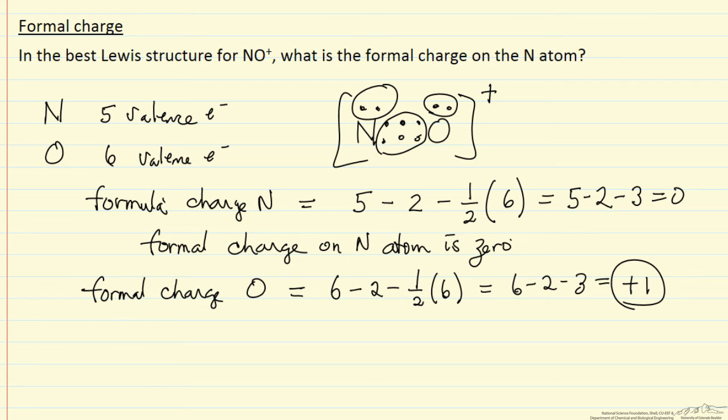This then is consistent because the sum of the formal charges has to equal the charge on the molecule, which is +1. Answering the original question, the formal charge on nitrogen is 0.